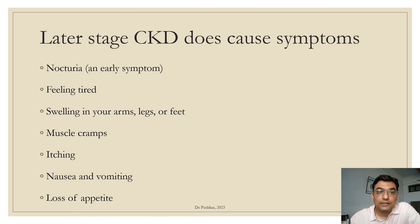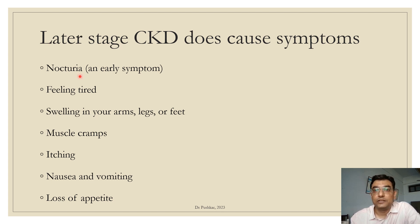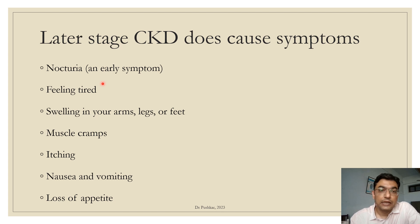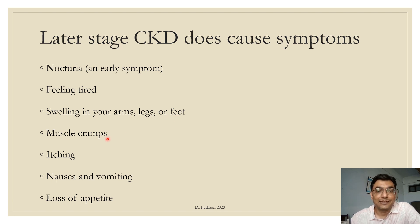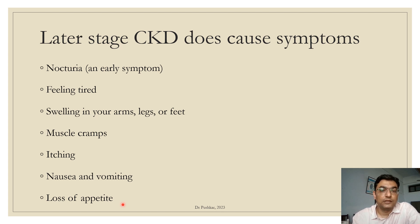When GFR decreases below 30 mL/min, in the later stages of CKD, the earliest symptom is nocturia due to loss of concentrating ability of the kidneys. Later, the patient may feel tired due to renal anemia, experience swelling in arms, legs, or feet due to fluid overload, and suffer from muscle cramps, itching, nausea, vomiting, and loss of appetite.